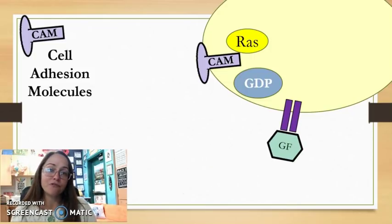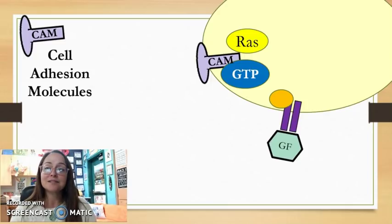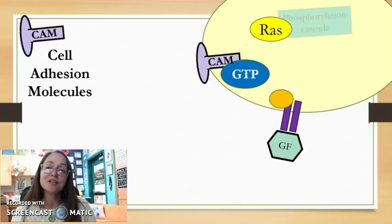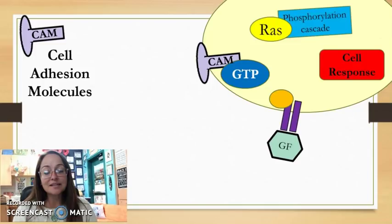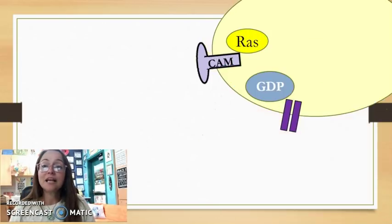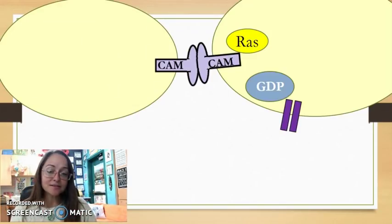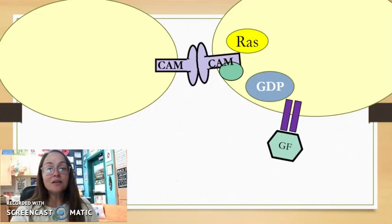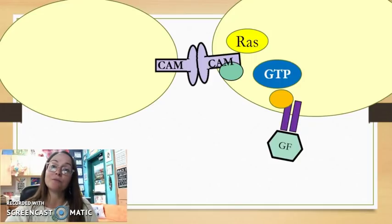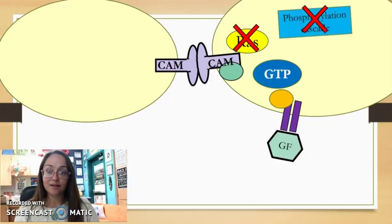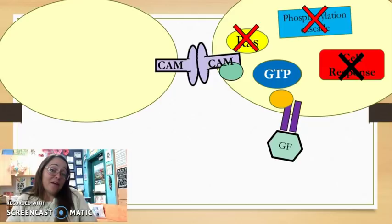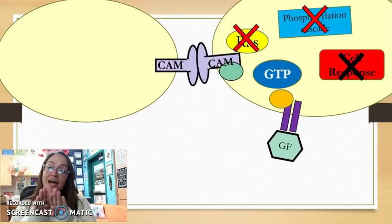If a cell receives a growth factor ligand, some proteins will interact within the cell. It will activate that G protein to become active, and the RAS will activate the phosphorylation cascade that leads to the cell response — in this case, cell division, mitosis. However, if two cells are touching and their cell adhesion molecules are together, that changes the way the proteins interact. Even though a growth factor attaches, the way the proteins are interacting, communication with the RAS protein gets blocked. Therefore, if the RAS protein is not activated, there's no phosphorylation cascade, no cell response, and the cells stop dividing. That's how they know they're touching another cell.